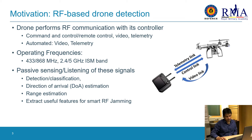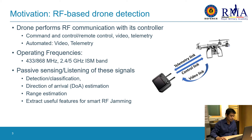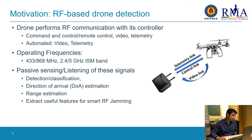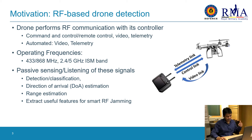How our detection works is that we mainly sense this communication — we listen to these communication links — and based on that, we can perform detection. We can classify the type of drone if we have the signal in our database. We can estimate the direction of arrival, perform range estimation, and also extract useful features from the signal itself for smart RF jamming.